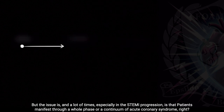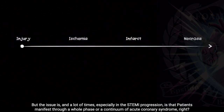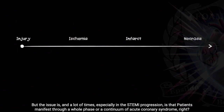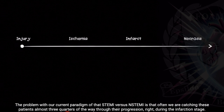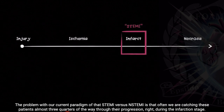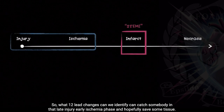The issue — especially in the STEMI progression — is that patients manifest through a whole continuum of acute coronary syndrome, from the onset of injury when the clot actually occurs, progressing into ischemia, infarction, and eventually necrosis. The problem with our current paradigm of STEMI versus NSTEMI is that we're often catching these patients almost three-quarters of the way through their progression, during the infarction stage.